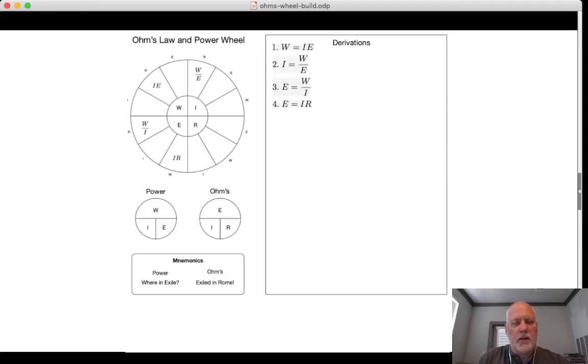We can now say that I is equal to, divide both sides by R, and you have I is equal to E over R. And if we're looking for R, R is equal to E over I. So using the same simple math, there we have six, or half of the formulas for the power wheel, just from that simple movement.